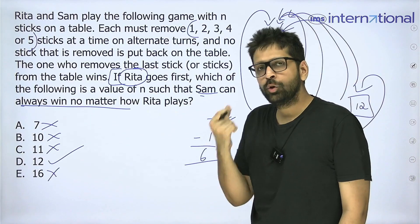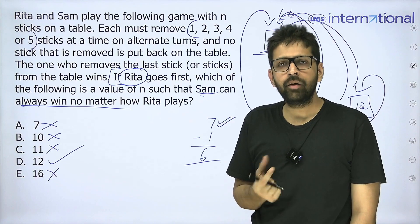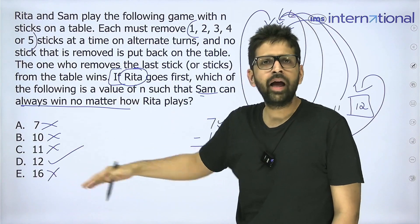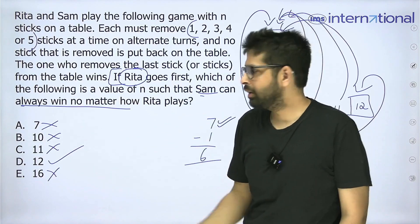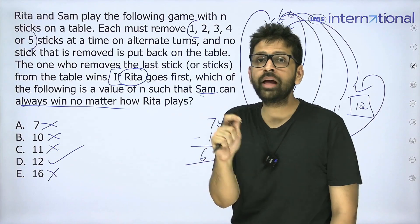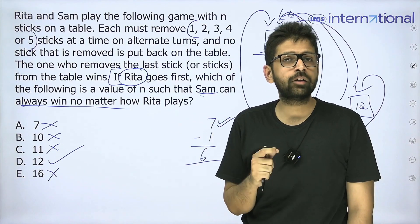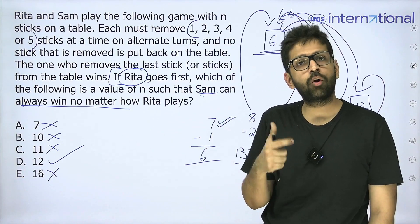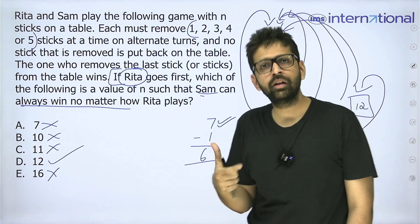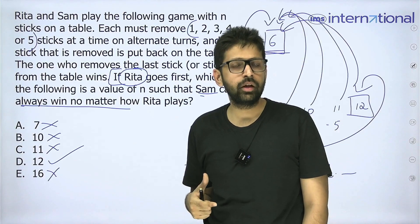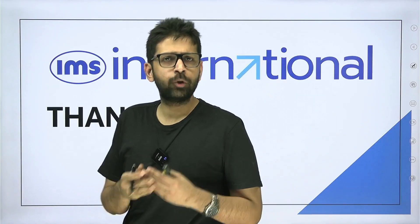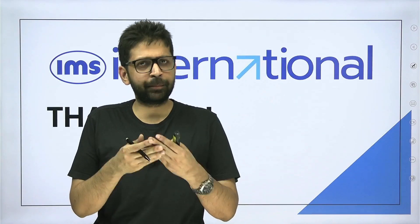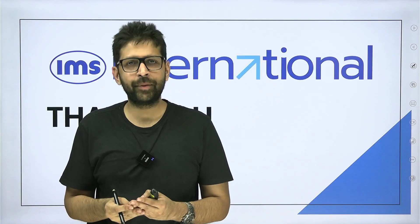You have to understand the pattern because the numbers were small and you could have used trial and error, but what if these numbers were big? You couldn't rely on trial and error, which is why it is very important to understand what kind of pattern is being formed in such questions. I hope you were able to understand this question. If you like this video, make sure to like and subscribe to our channel for more such amazing content.